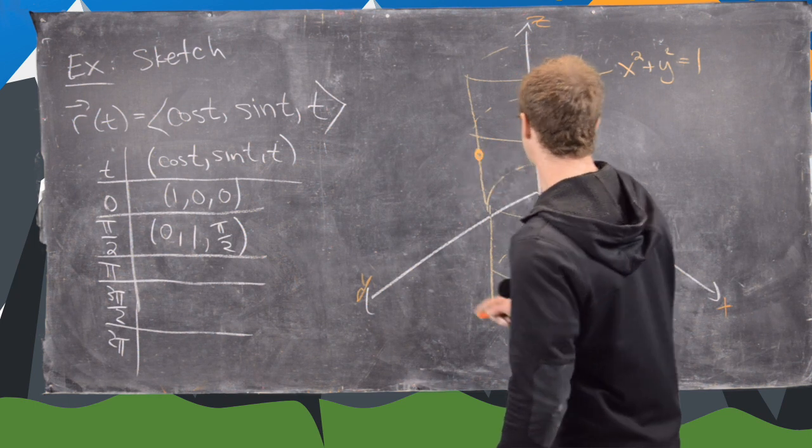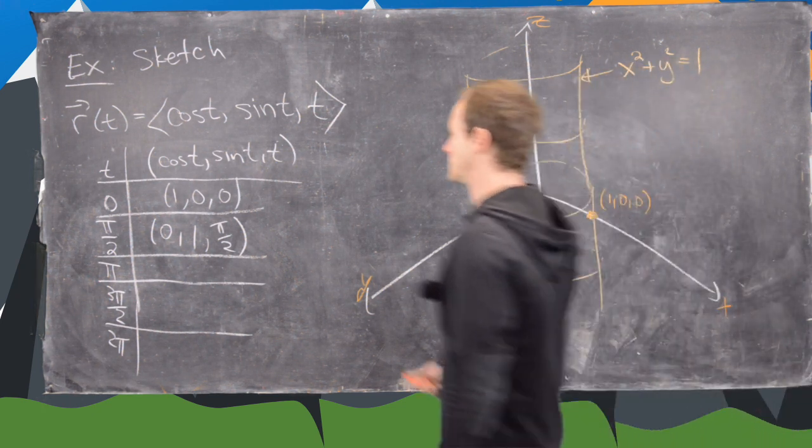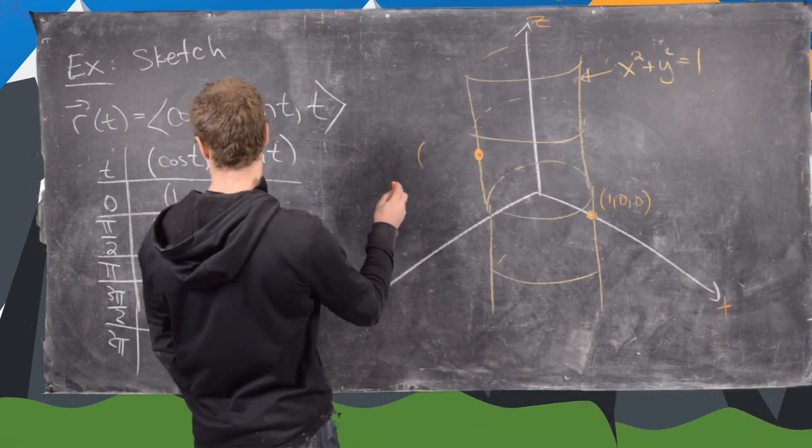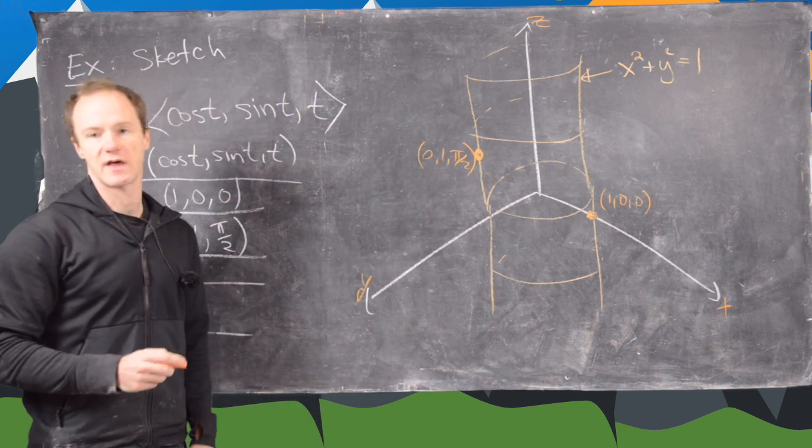So we're up here at this point right here. So notice this point that we started with was 1, 0, 0. Now this point right here is 0, 1, pi halves. So we're there.